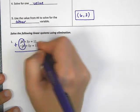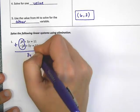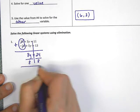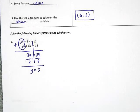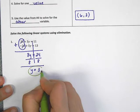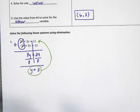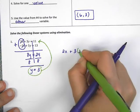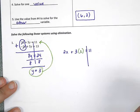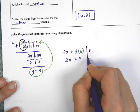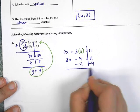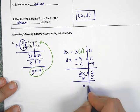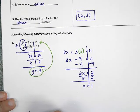The x terms cancel, which means if I add, 3y plus 5y is 8y, and 11 plus 13 is 24. I divide by 8 to get y by itself and get y equals 3. Now that I know y equals 3, I plug the 3 into the original equation and solve for x. So 2x plus 3 times 3 equals 11. Since 3 times 3 is 9, I have 2x plus 9 equals 11. Subtract 9 on both sides: 2x equals 2. Divide by 2: x equals 1. My final answer is (1, 3).